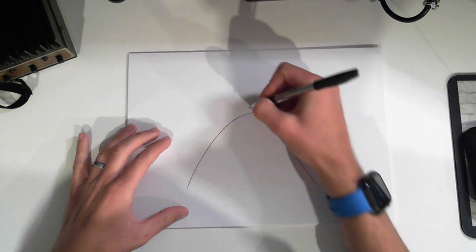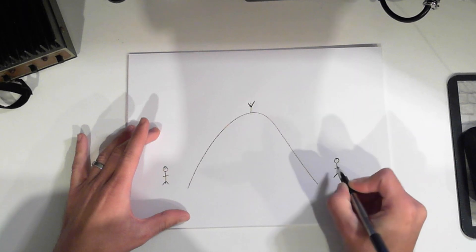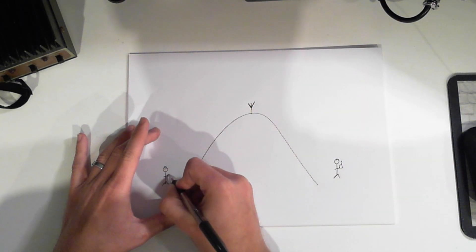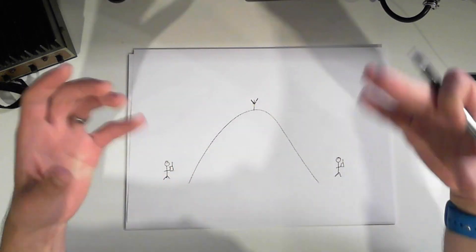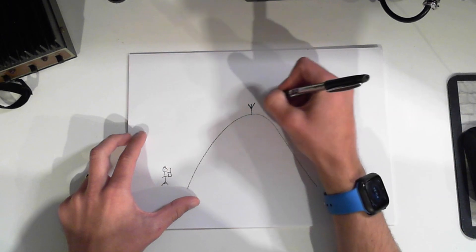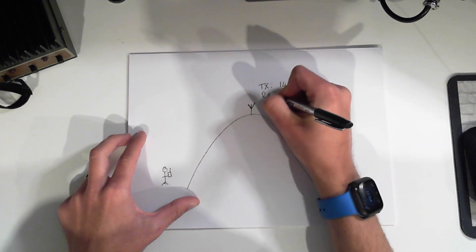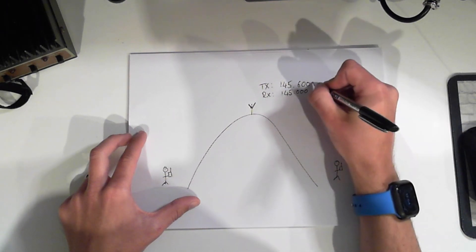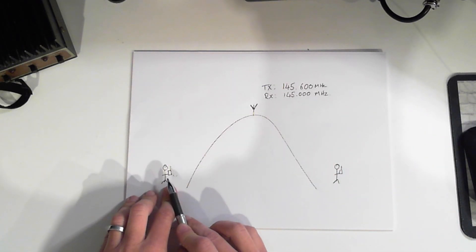Let's take a step back and briefly talk about what a repeater is. A repeater repeats, essentially. If we imagine we've got a mountain and we put a repeater at the top of it, and we have one guy down here and another guy down here who can't communicate using their little handheld radios — they can't communicate because of the mountain in the way. This repeater has an output frequency: it transmits on 145.600 MHz and it receives on 145.000 MHz. So each person, if they transmit on 145 MHz and listen on 145.6, they're able to communicate with each other via this repeater.